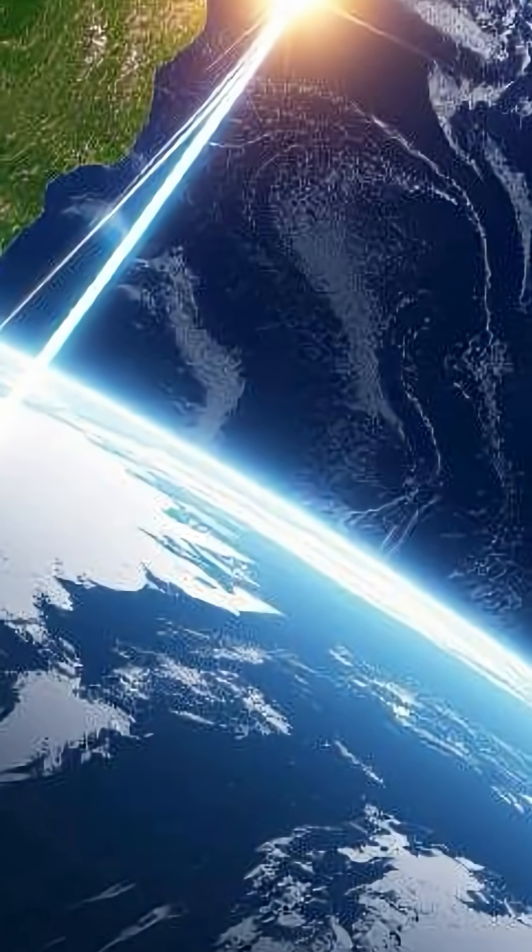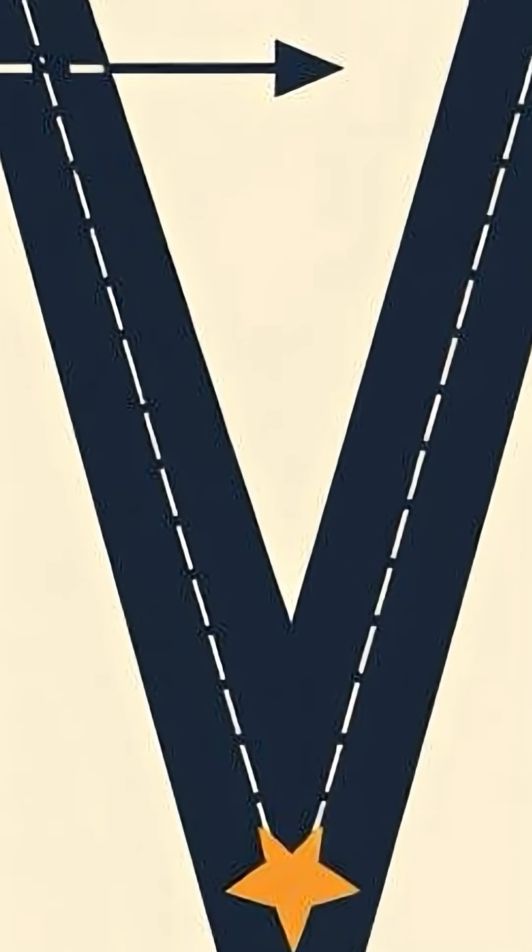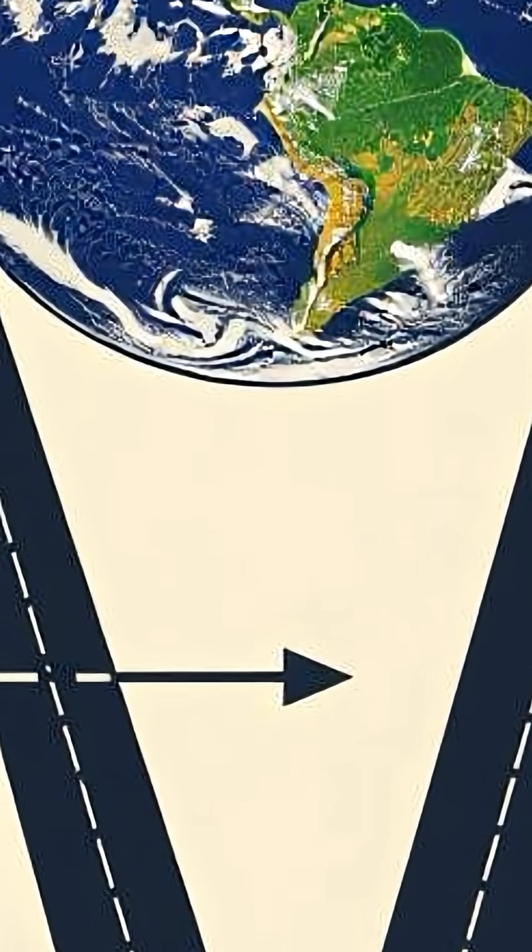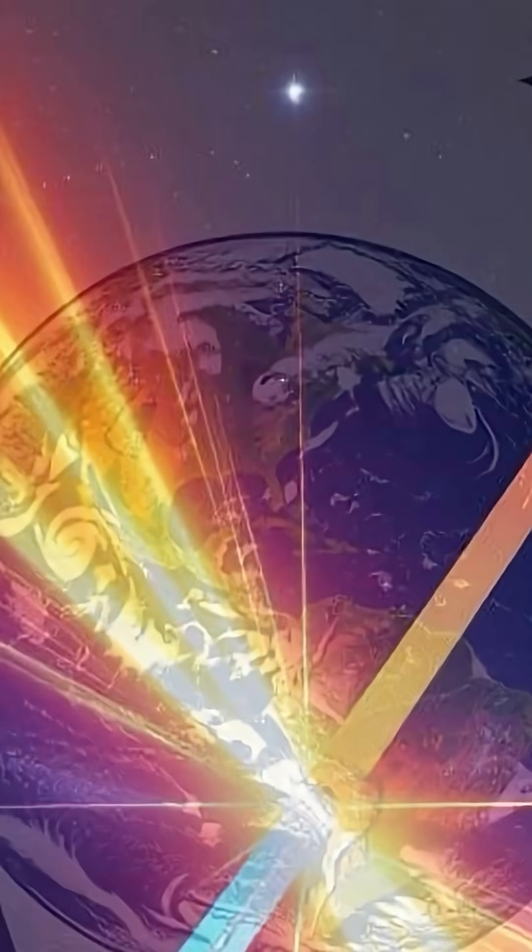The traveling twin's path is a V-shape with two distinct segments representing the outbound and inbound journeys. The length of the path in space-time represents the proper time experienced by the twin.